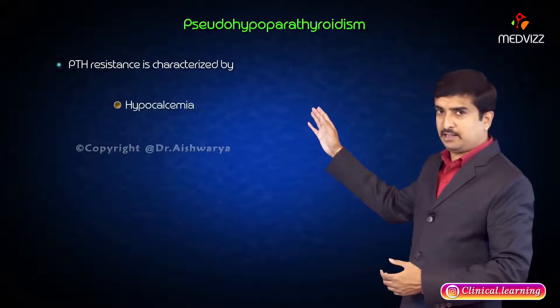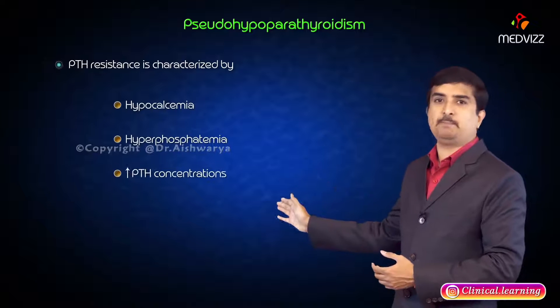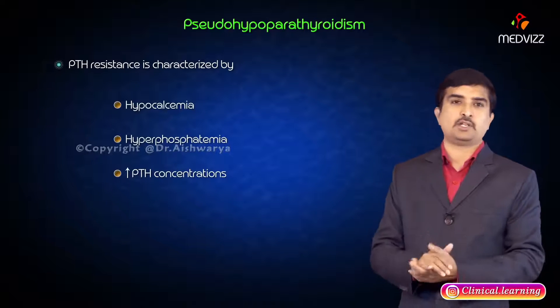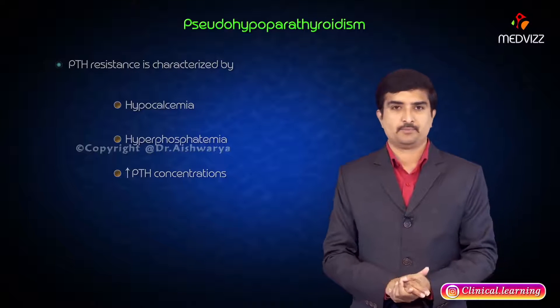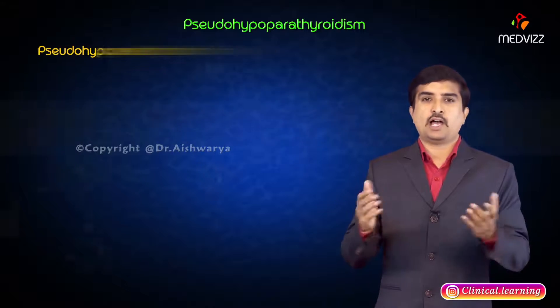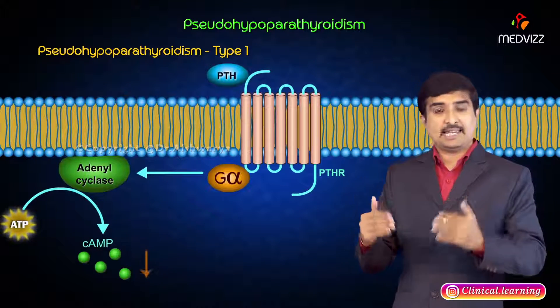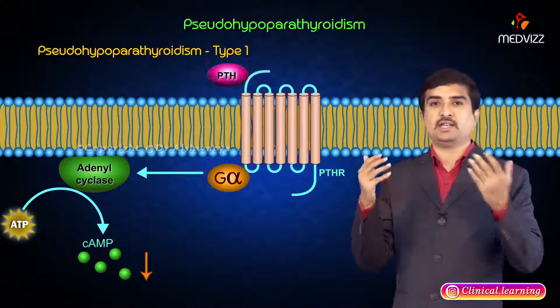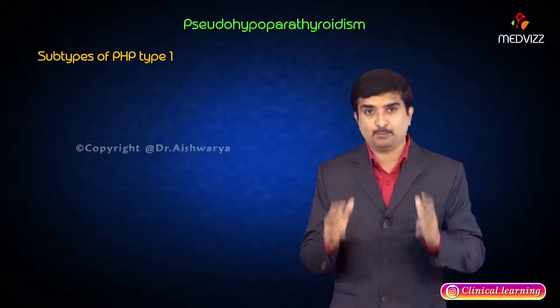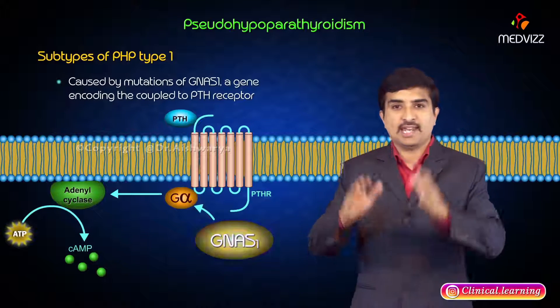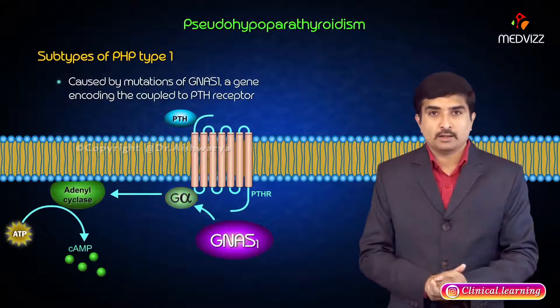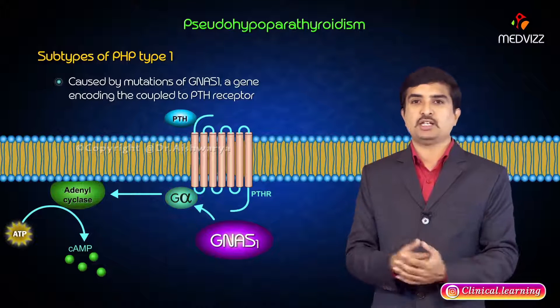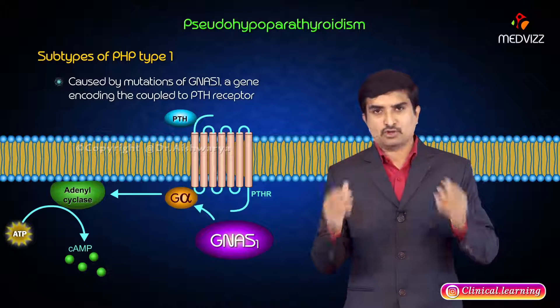PTH resistance is characterized by hypocalcemia, hyperphosphatemia, and elevated PTH concentrations. In patients with pseudo-hypoparathyroidism type 1, there is a diminished urinary cyclic adenosine monophosphate (cAMP) response to exogenous PTH administration. There are several subtypes of PHP type 1 caused by mutations of the GNAS1 gene, which encodes the alpha subunit of the G protein coupled to the PTH receptor.